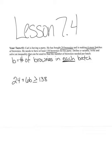So our inequality here for this problem is 24 plus 6b is greater than or equal to 138. And so to solve it, I'm going to start by subtracting 24 from both sides, and I've got 114. So my new inequality now is 6b is greater than or equal to 114.